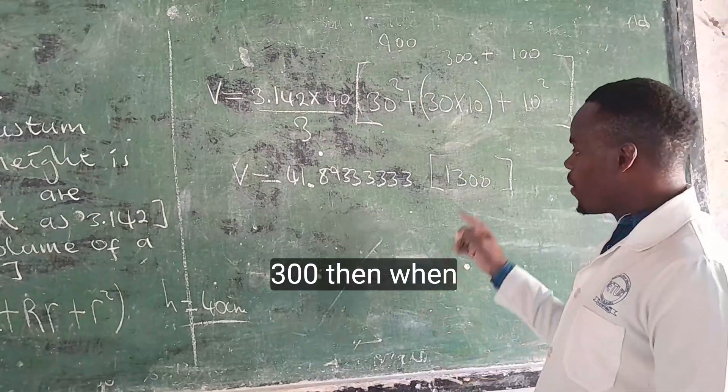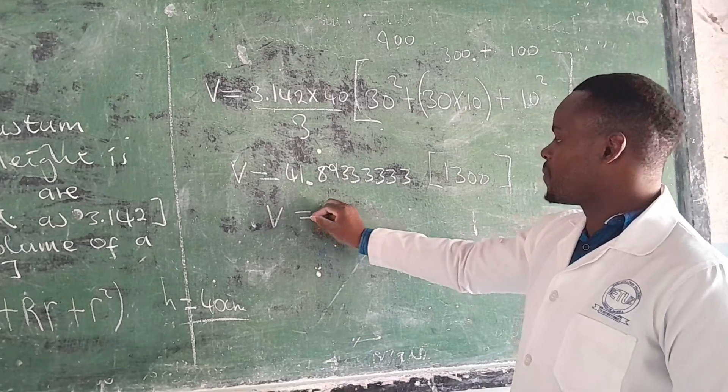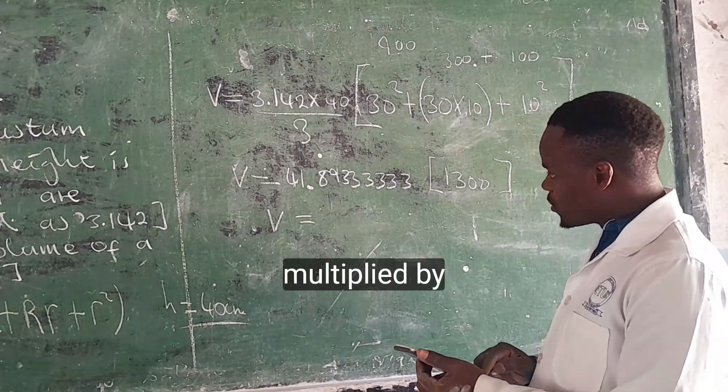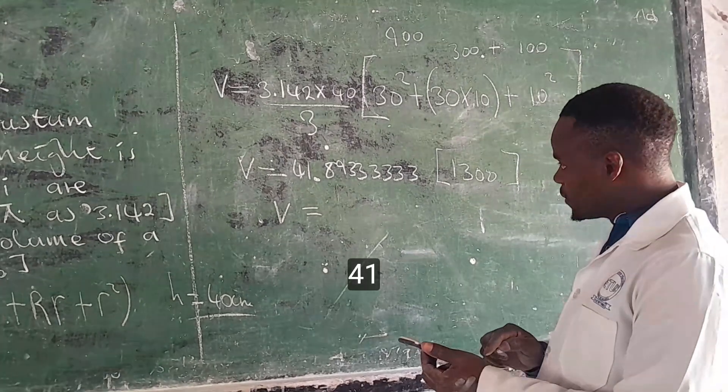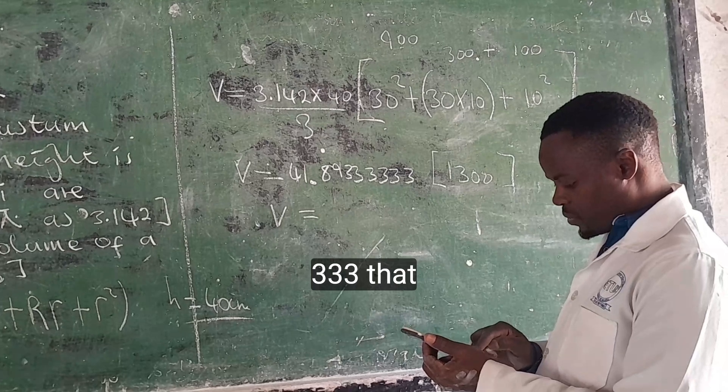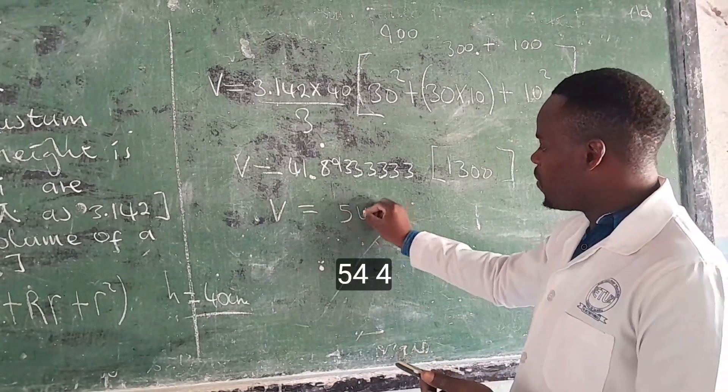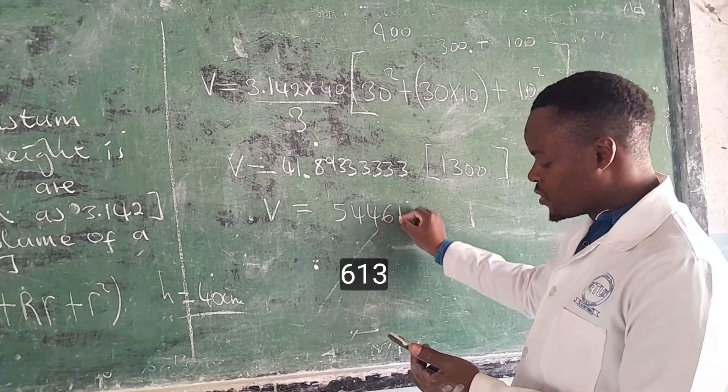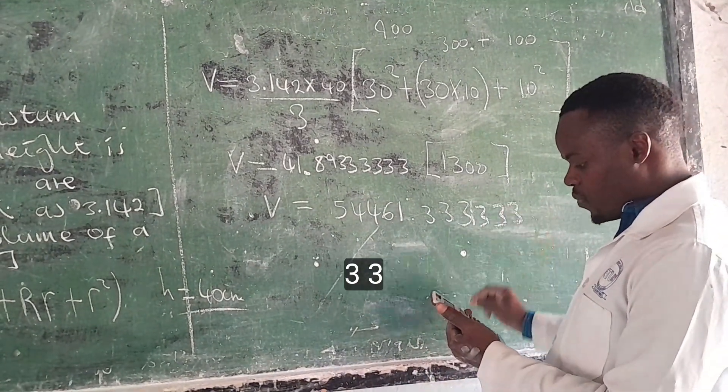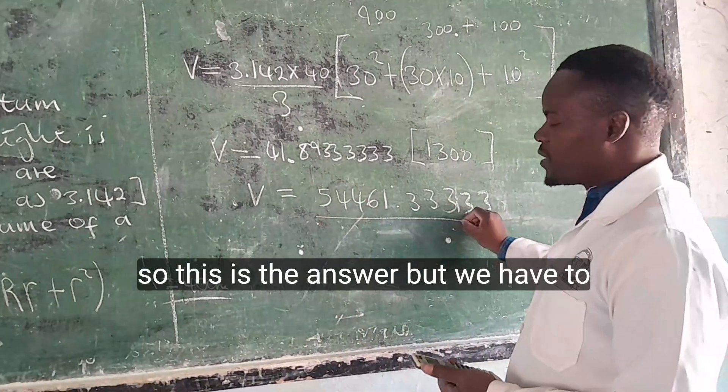Then when we find this one, it has to be multiplied by what's on the outside. So 1300 multiplied by 41.89333333 equals to 54461.333333.